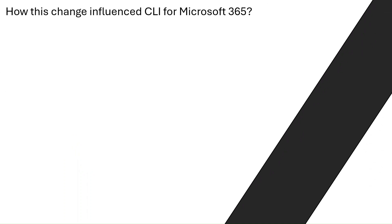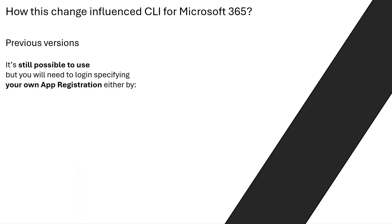So how do these changes in the PNP management shell actually influence CLI for Microsoft 365? Do you need to install the latest version? Well, you don't need to if you don't really want to, because the previous versions will still work. There's only the tiny detail that the previous version of CLI by default will try to log you in over the PNP management shell app registration, which is not there anymore. So now if you want to use older versions of CLI, you will need to provide your own app registration — create it beforehand.